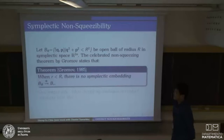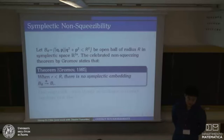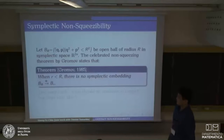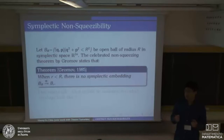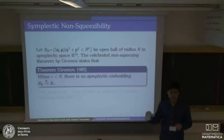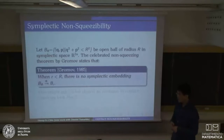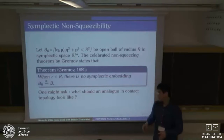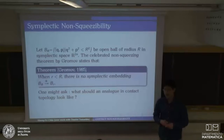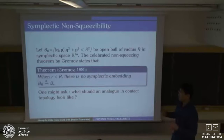This is a very fascinating, celebrated theorem by Gromov: Symplectic Non-Squeezability. Say we have an open ball of radius R in symplectic Euclidean space R^{2n} — even dimensional. The theorem says that you cannot squeeze a large ball into a ball of smaller size by a symplectic embedding, where symplectic uses the usual canonical symplectic form on R^{2n}. One might wonder: what should an analog in contact topology look like, since contact topology is considered a sibling of symplectic geometry?